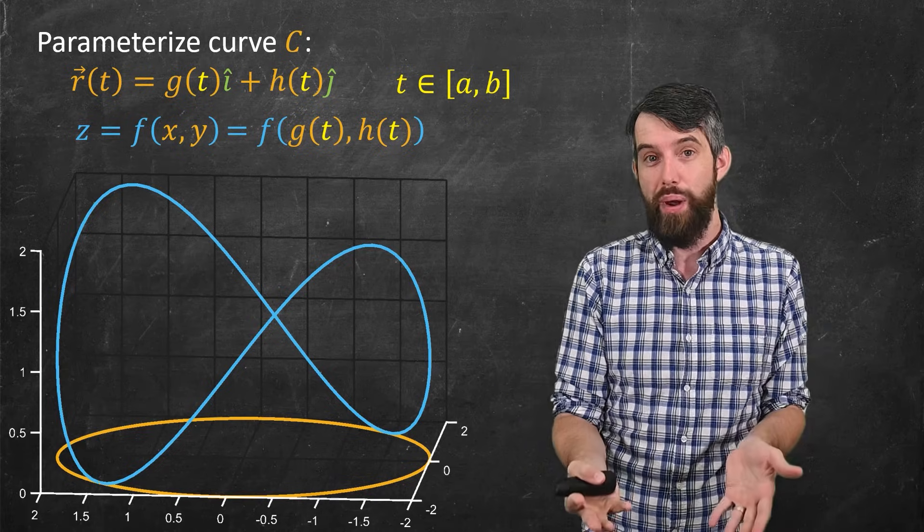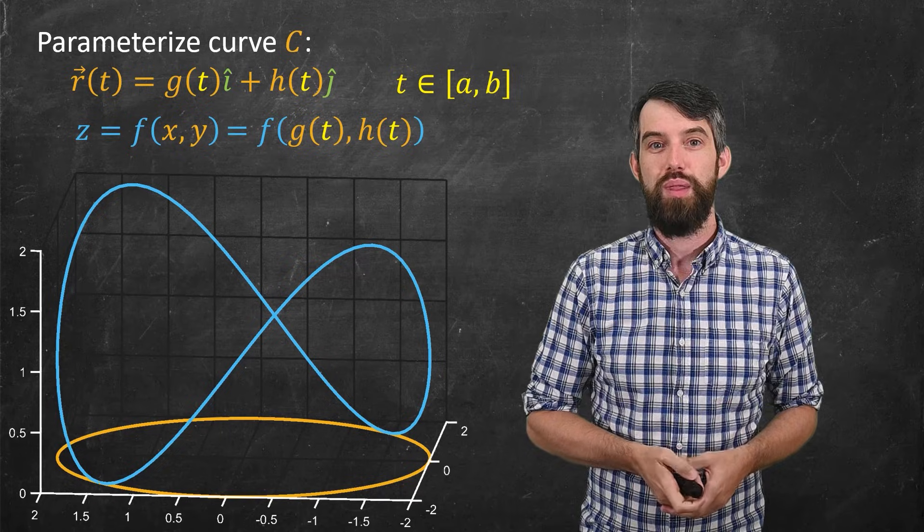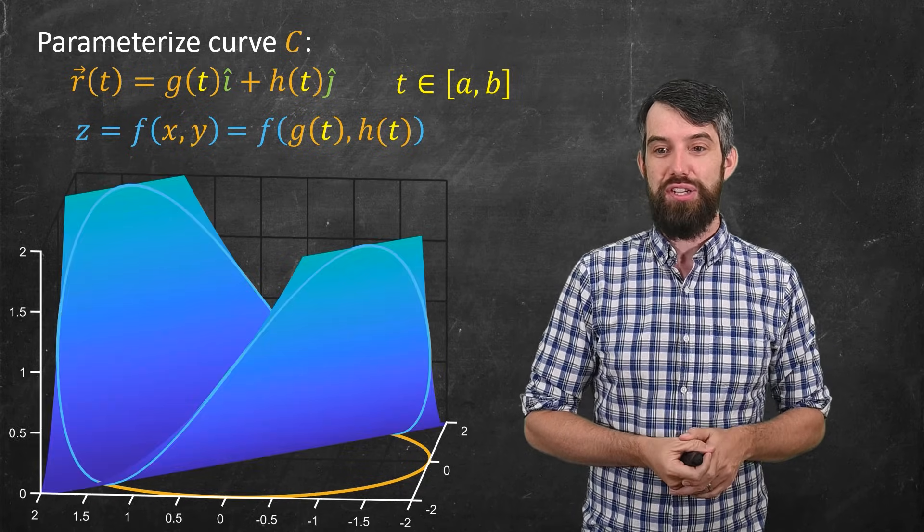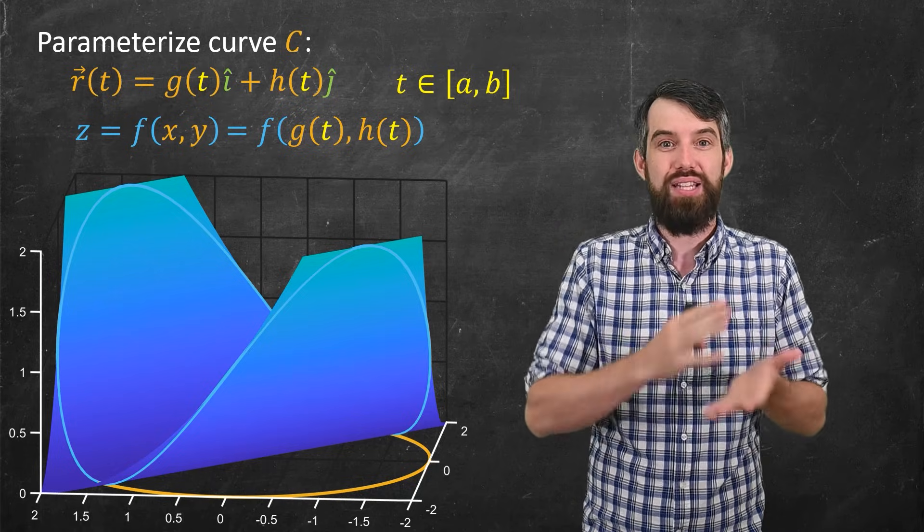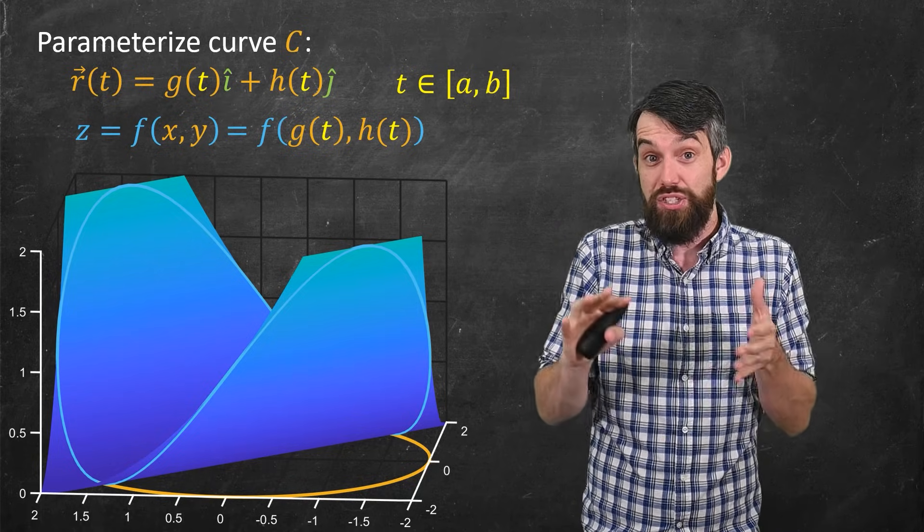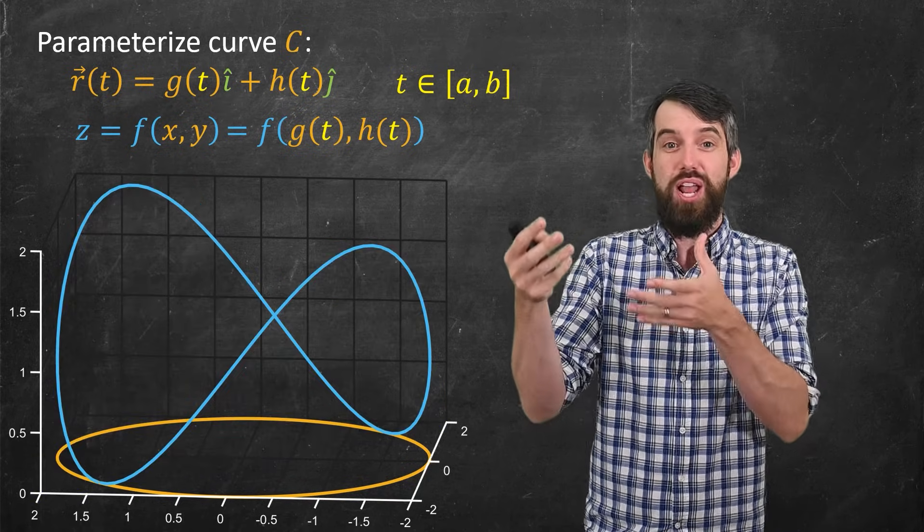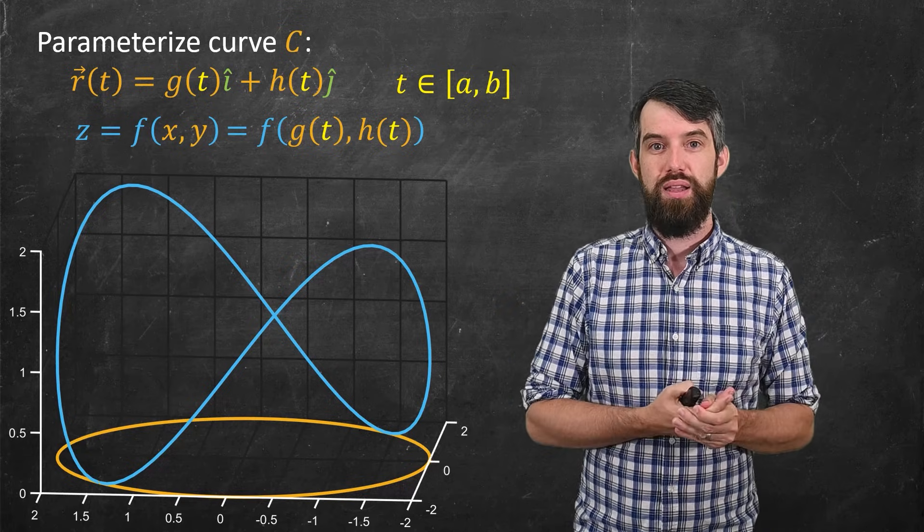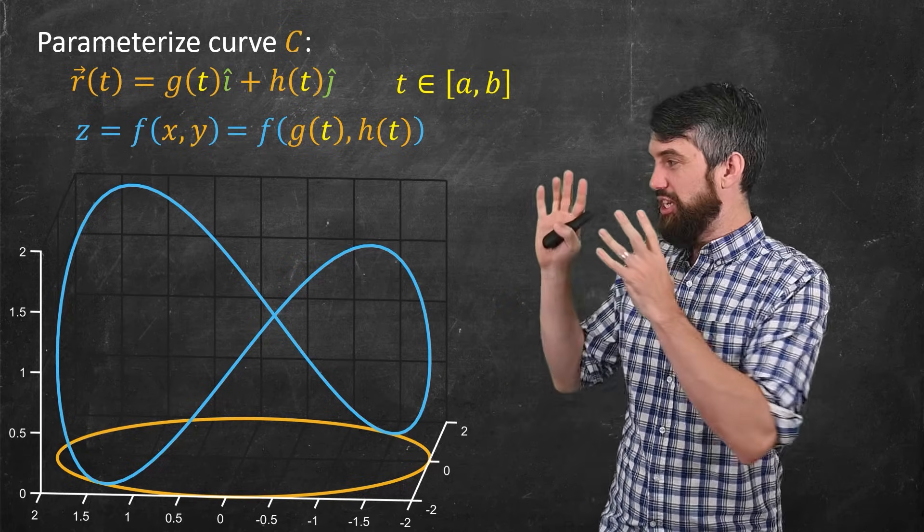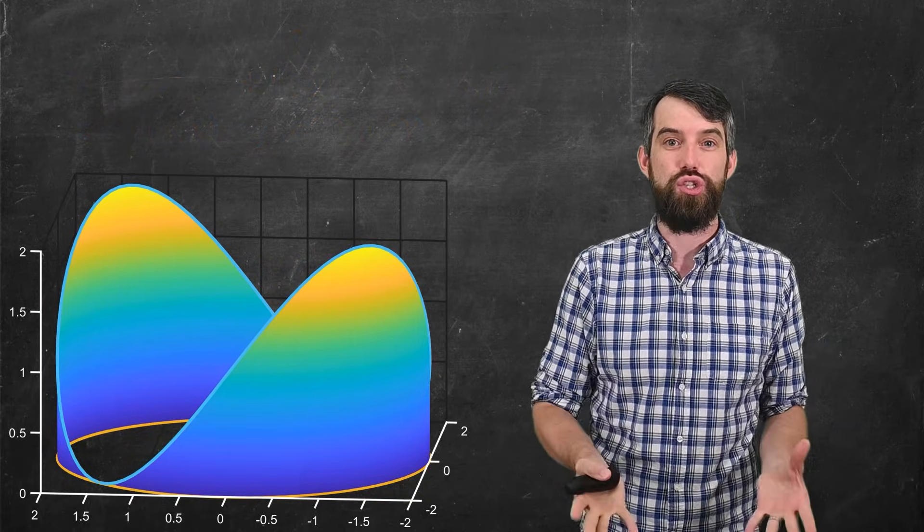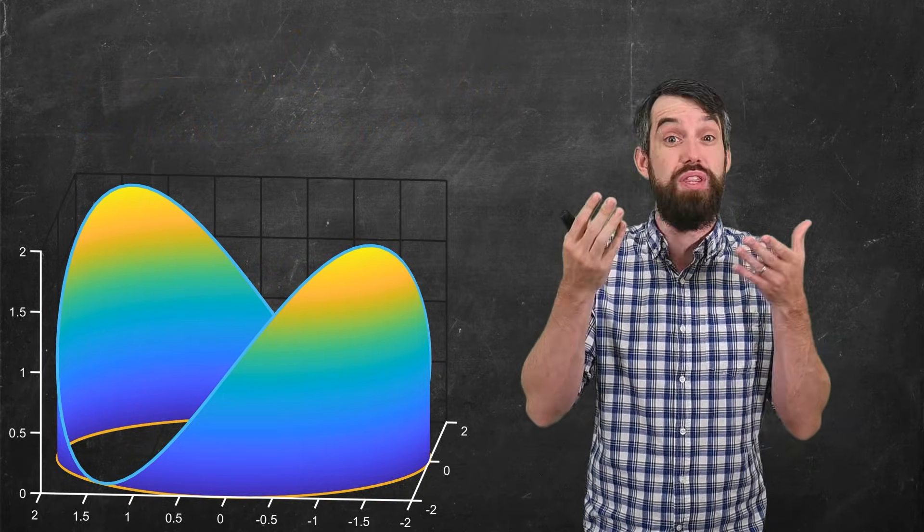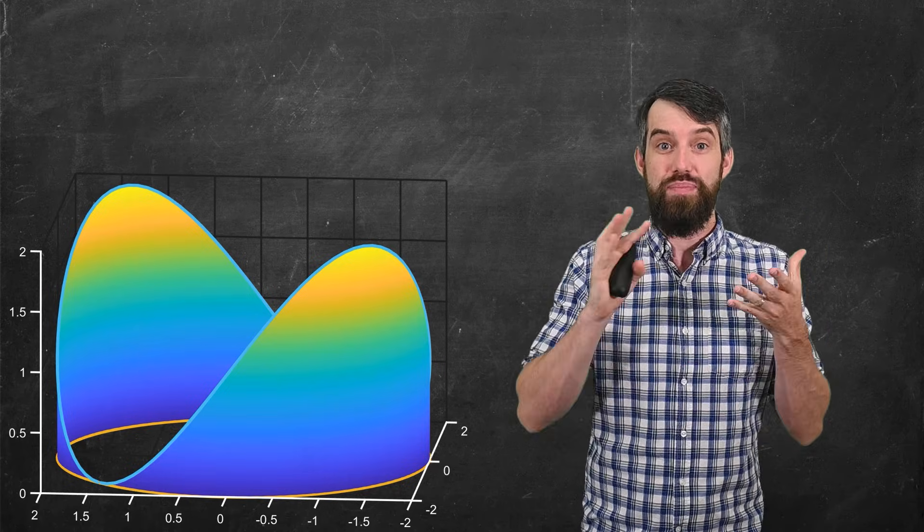Now it might be the case that the function f(x,y) is actually defined on many more points than just the curve c. For example, when I was figuring out this animation, I actually have my f(x,y) being some paraboloid. It is defined on many more points than just the curve. The only parts of the function I care about are those above this curve. And then my final step is just to shade everything in, so at any point along my curve c, I just draw up until I hit the blue to the height f(x,y).